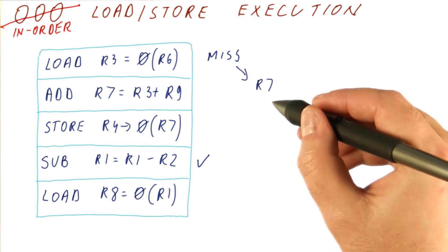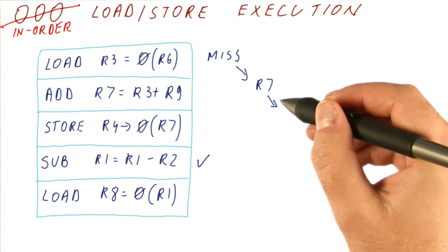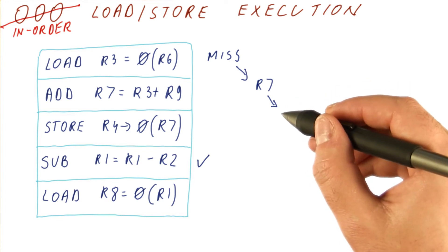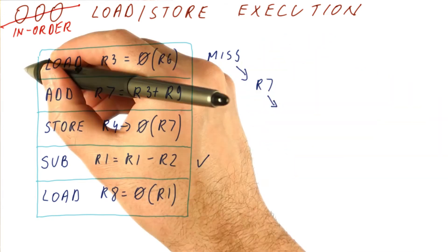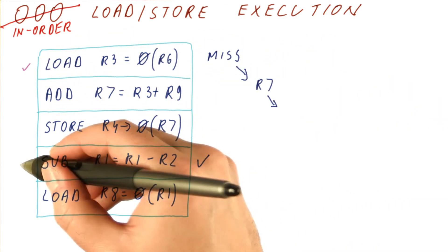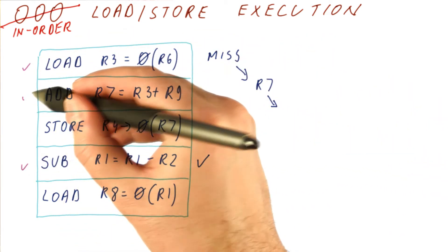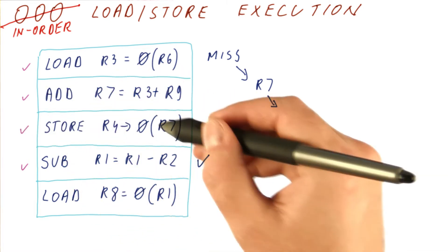We compute R7, and then very quickly afterwards, we are going to compute the address for the store. So now what we have is, this load gets done, this instruction was already done, eventually the add gets done, and eventually the store gets done.